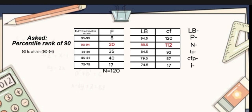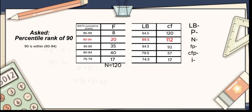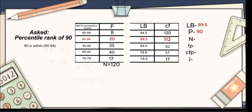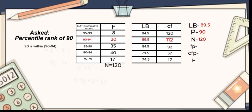Since your table is now complete, you should fill in the needed variables on the right side. The problem states about finding the percentile rank of 90, and 90 is within 90 to 94, so let's focus on the second row or the red color only. Our LB is 89.5. Our P is 90, since we are finding for the percentile rank of 90. Our N is 120, the sum of our frequency under the F column.